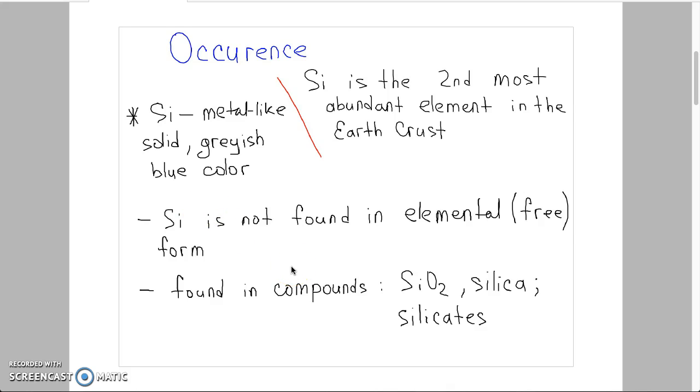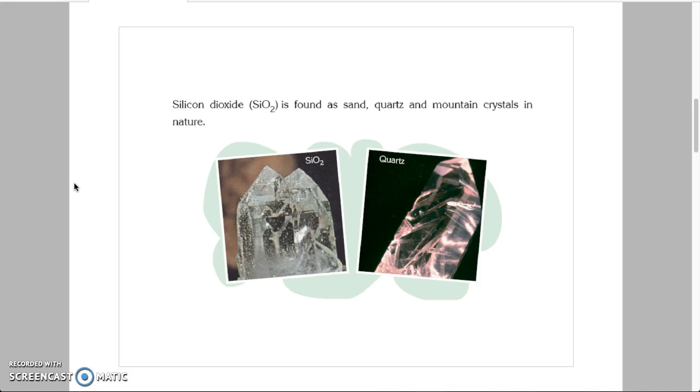Silicon is not found in elemental or free form in the earth. It can be found only in compounds, for example silicon dioxide (SiO2) or silica and in silicates. Both of them form 95% of rock in the earth.